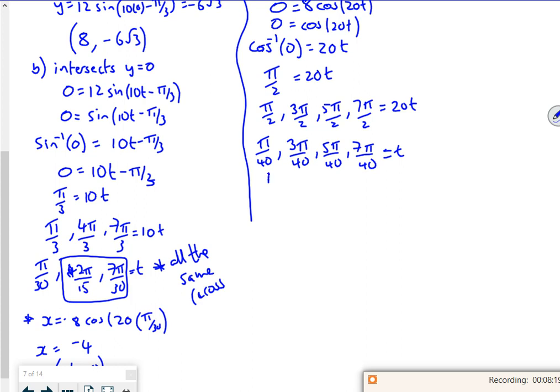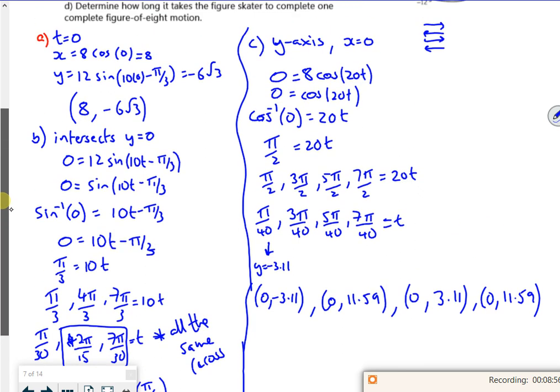So that's a coordinate of 0 minus 3.11. Then if I sub in the rest of them, if I sub in the 3 pi over 40 into y, that gives me 0 and 11.59, and then 0 and 3.11, and then 0 and 11.59. That kind of matches on the graph, doesn't it, really? I'm tired now. We've got one minute left as well.